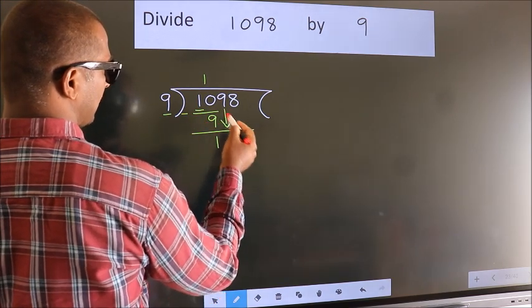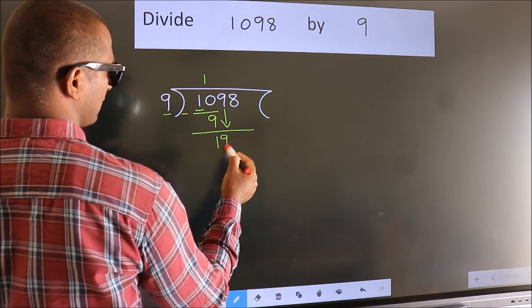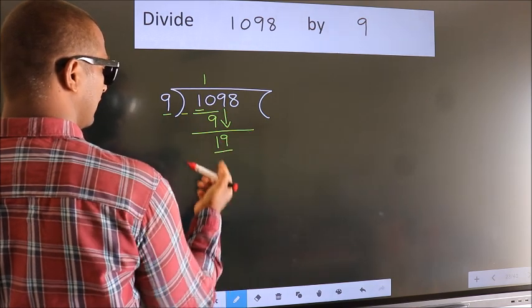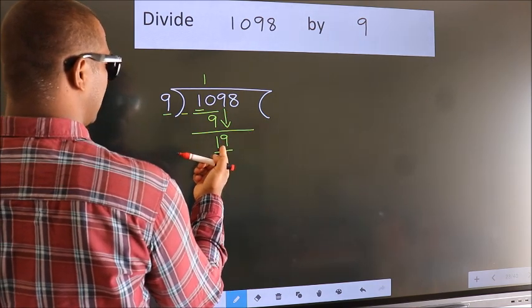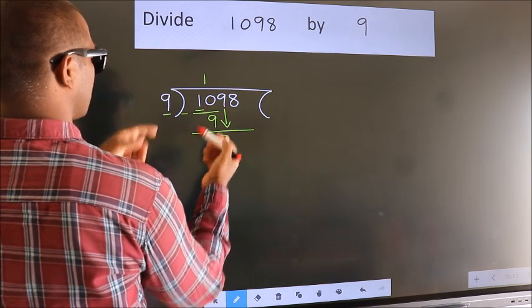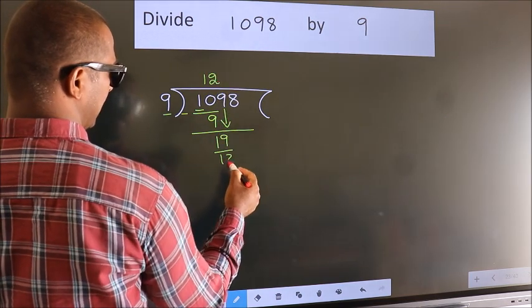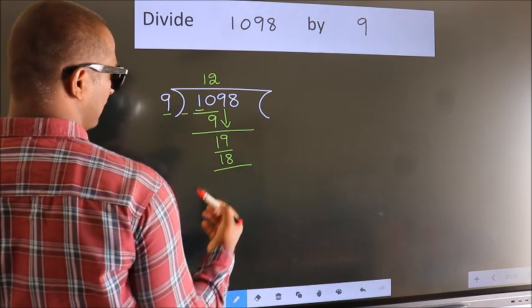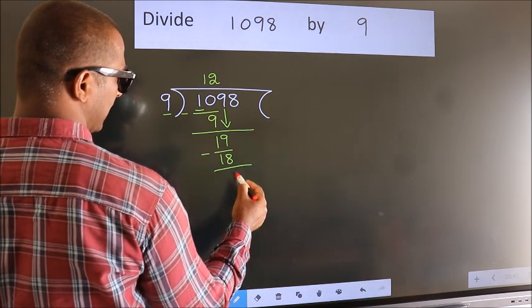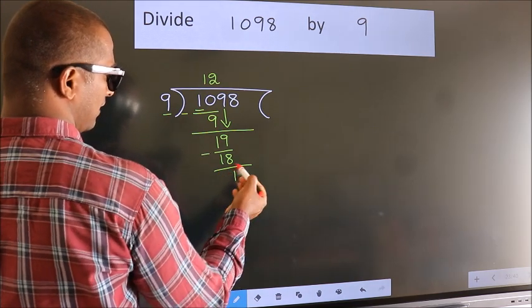bring down the beside number. So, 9 down. So, 19. A number close to 19 in the 9 table is 9 twos, 18. Now we subtract. We get 1. After this,